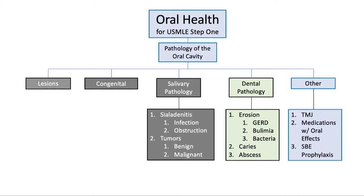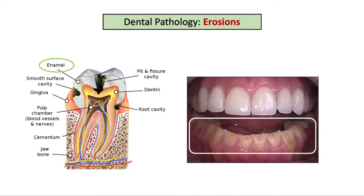In so far as dental topics, let's start with a review of erosion and etiologies, followed by a brief mention of caries and abscesses. Dental erosion is caused by acid, which demineralizes the enamel, revealing the dentin and eventually the pulp below.